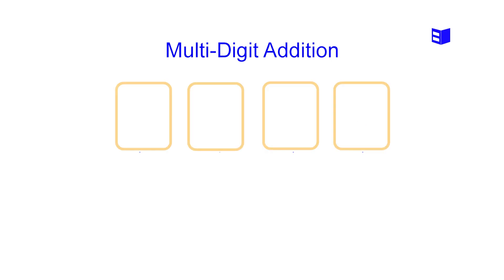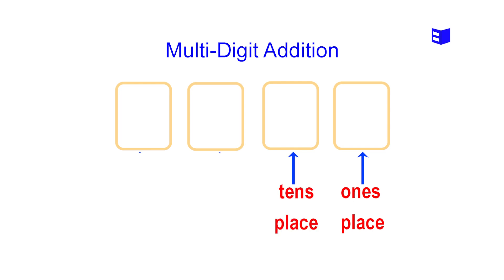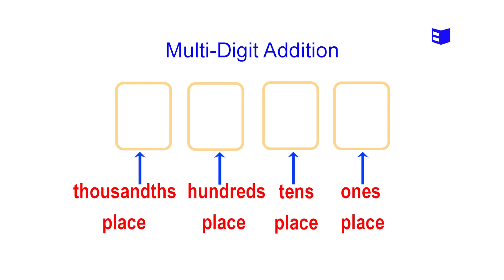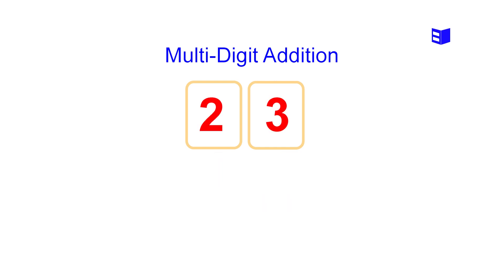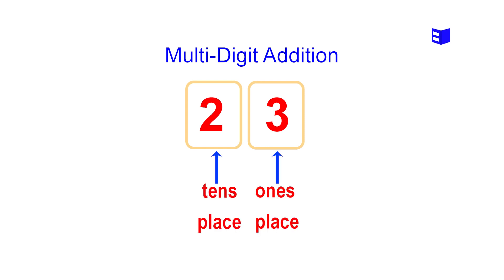Looking at the screen, we see there are boxes of ones, boxes of tens, boxes of hundreds, and boxes of thousands. We can use these cells to know the position of the digits. For example, for a two-digit number we use two cells — if the number is 23, then the number 3 is in the ones place and the number 2